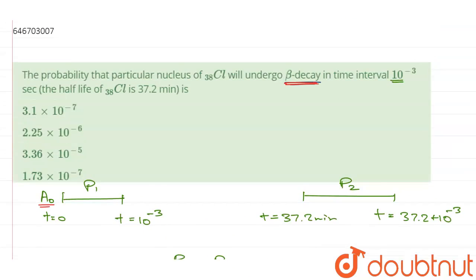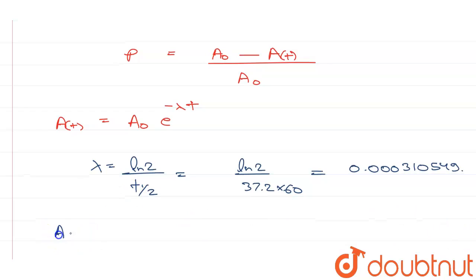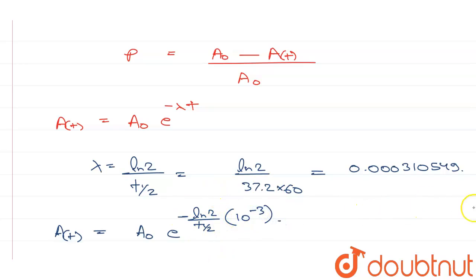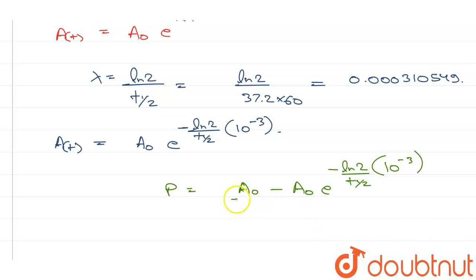T-half in the question is given as 37.2 minutes, so λ = ln2 / (37.2 × 60) seconds, which gives 0.000310549. From here, A at time t equals A₀ · e^(−ln2/t½ · 10⁻³). Therefore the probability P equals [A₀ · e^(−ln2/t½ · 10⁻³)] divided by A₀, which simplifies to 1 − e^(−ln2/t½ · 10⁻³).